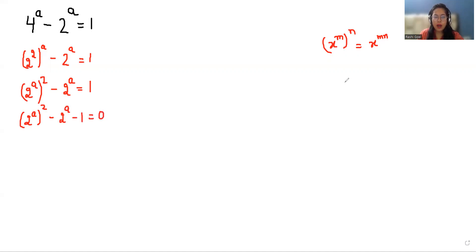Now I am assuming let 2^a = x. So I am going to replace the value, giving us x^2 - x - 1 = 0. Now this looks like a quadratic equation.